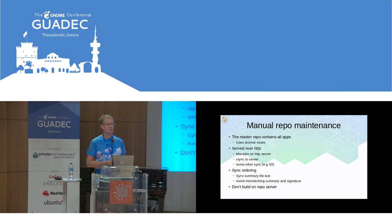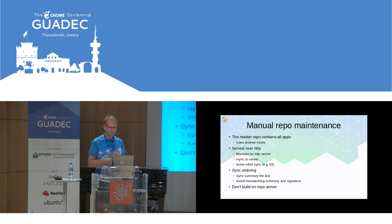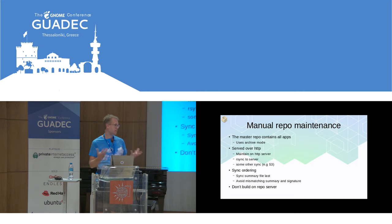If you're syncing to a different machine you have to be really careful about the summary file. You can always upload new objects — unless you change the summary file, nothing will ever access them, so it's safe to add them. But once you update the summary file, all the objects it references had better already be in the repository. So you have to have a two-phase thing: sync the objects first, then sync the summary file.